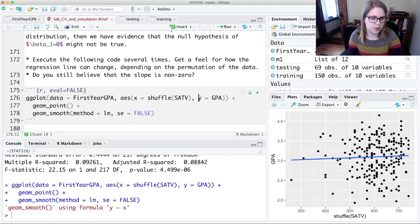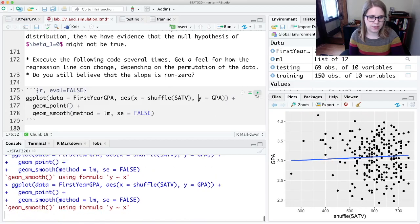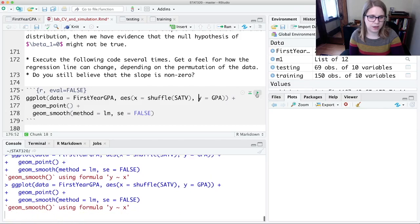And so if there was no relationship, we might see a slope that is slightly positive like this, or maybe we would see a slope that was slightly negative like this, or slightly positive or slightly positive again, right?